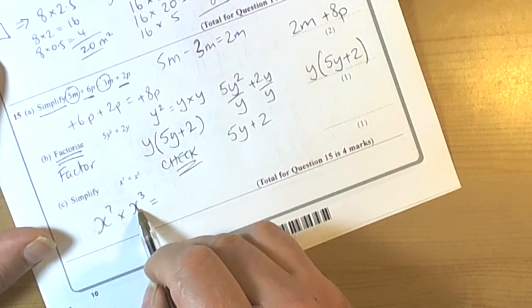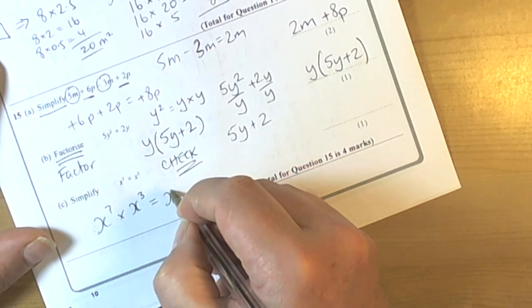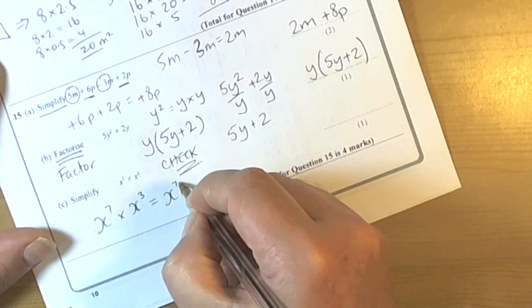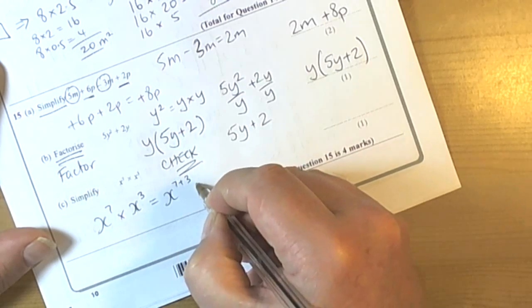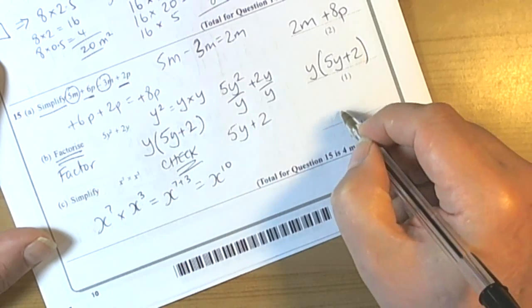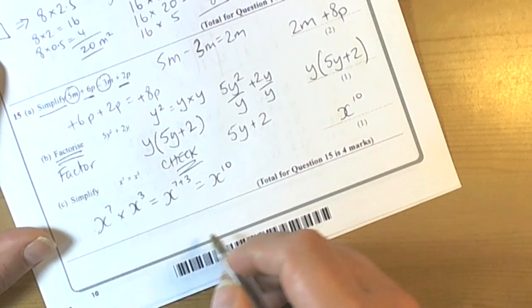the same bases here are both Xs, so the rule says that we can add the powers. So X to the power of 7 plus 3 is X to the power of 10. The answer is X to the power of 10.